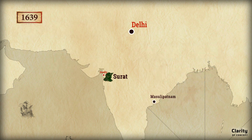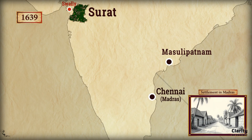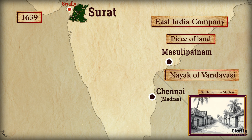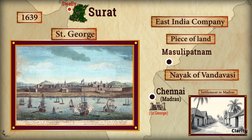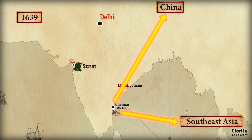In 1639, the English made another important move by establishing a settlement in Madras, now called Chennai. The East India Company secured a piece of land from the local ruler, the Nayak of Vandavasi, and built Fort St. George. This settlement grew quickly and became the company's major hub on the southeastern coast of India, serving as a crucial point for trade with Southeast Asia and China.